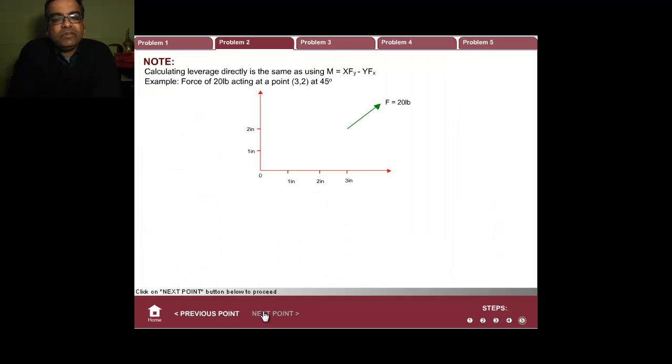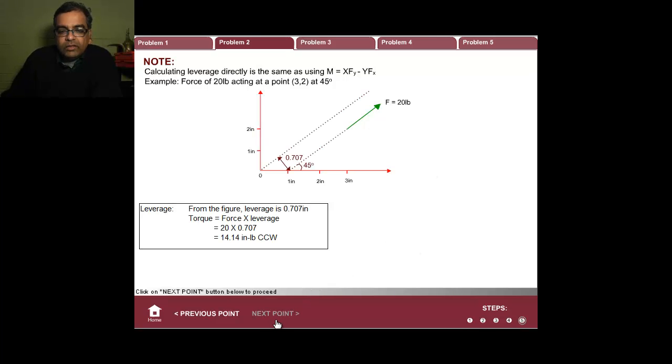Before we go, I want to make one more point. Some of you have this idea that you can also do it by doing leverage, drawing a parallel line and so on. I want to show you with an example that doing this or xfy minus yfx will give you the same answer. Suppose I have a force shown here—20 pounds, 45 degrees, acting at the point (3,2). There are two different ways of doing it. One way is by drawing these parallel lines. Can you see that? And measuring that gap distance—it will turn out to be 0.707. You can compute force times the gap distance. If I want to find the moment about this point, force times the gap distance will give you 14.14. If I look at this point O, it's getting turned counterclockwise by the force F, so it's CCW.